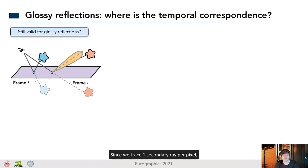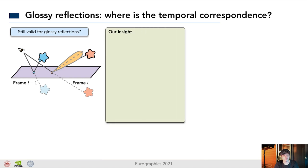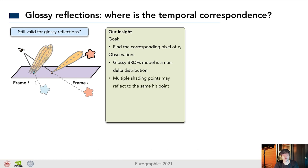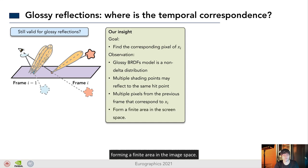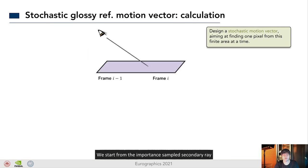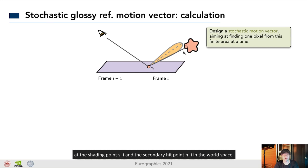Since we trace one secondary ray per pixel, we can only importance sample the glossy lobe to decide where to bounce. And the bounce direction can certainly be different from the specular reflected direction. Our insight is that no matter if we are using the specular or sample direction, what we need to do is still to find the corresponding pixel in the previous frame. However, since glossy BRDFs model a non-delta distribution, multiple shading points may reflect to the same hit points, as there are multiple pixels from the previous frame that correspond to x sub i, forming a finite area in the image space. So, our goal is to design a stochastic motion vector, aiming at finding one pixel from this finite area at a time.